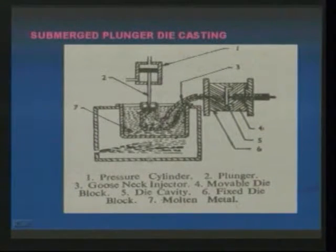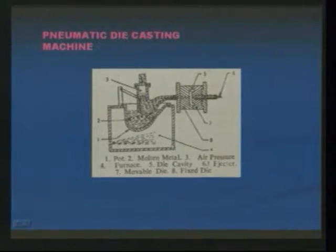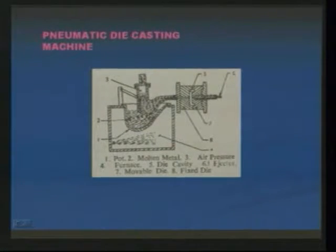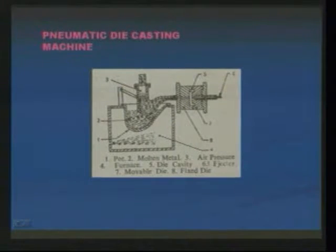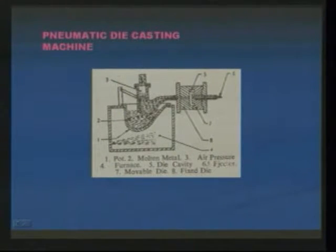From the bottom, compressed air is also forced. Next is pneumatic die casting — in this case, the gooseneck drops downward, collecting molten metal from the furnace or molten pot. Air pressure is applied from the top, and due to this air pressure, the molten metal is projected into the die cavity. The movable die and fixed die movements produce the corresponding product.